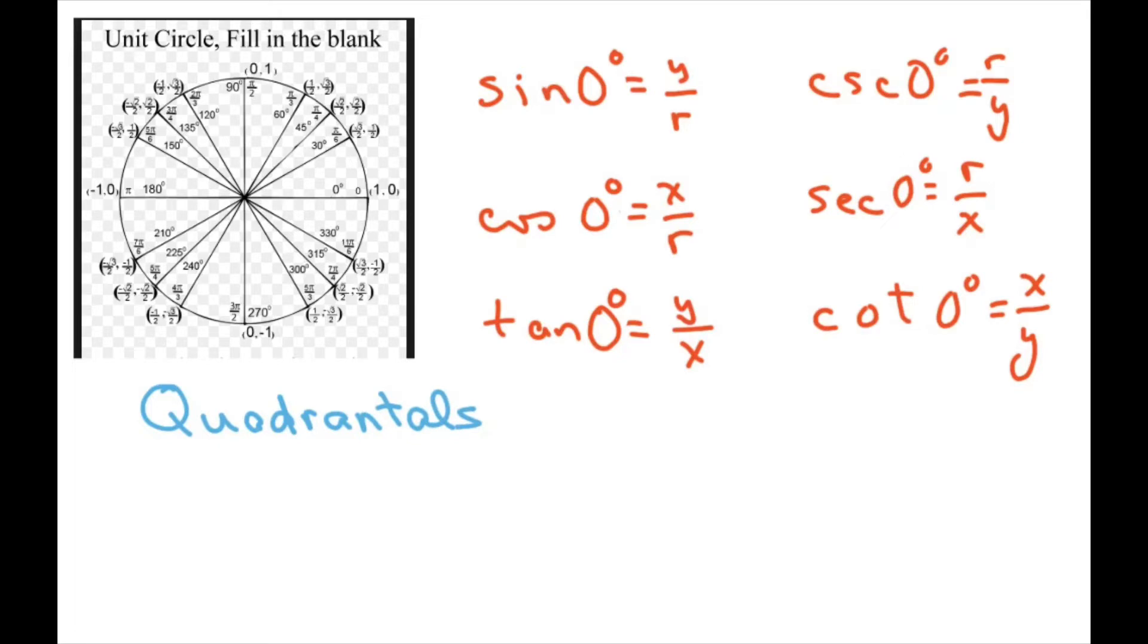That means we're going to be doing it for 0, 90, 180, 270, and then back to 360. There's not a 360 on here, but 360 and 0 are coterminal, so they have the same ordered pair.